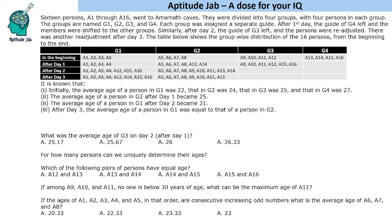Hello everyone, welcome to Aptitude Jam. This problem states that there are 16 persons A1 through A16 who went to Amanat Caves. They were divided into 4 groups with 4 persons in each group. The groups were numbered G1 to G4 and each group was assigned a separate guide.